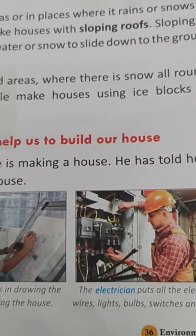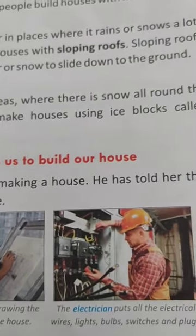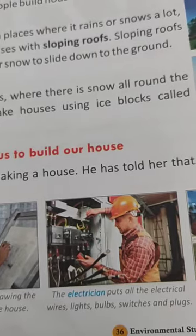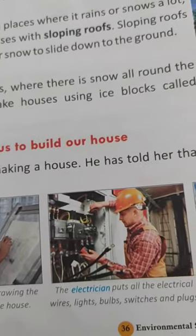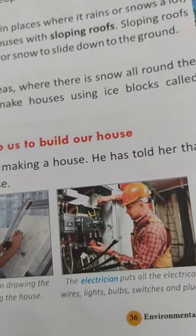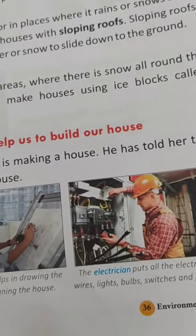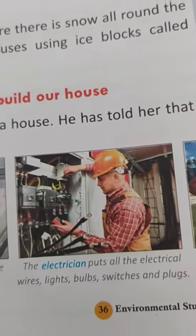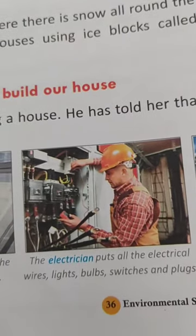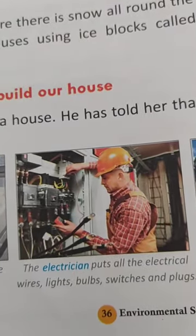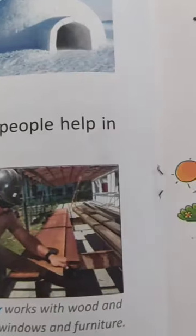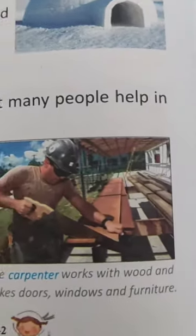Indu's uncle is making a house. He has told her that many people help in building a house. The architect helps in drawing the plan and designing the house. The electrician puts all the electrical wires, lights, bulbs, switches and plugs. The carpenter makes the furniture items.